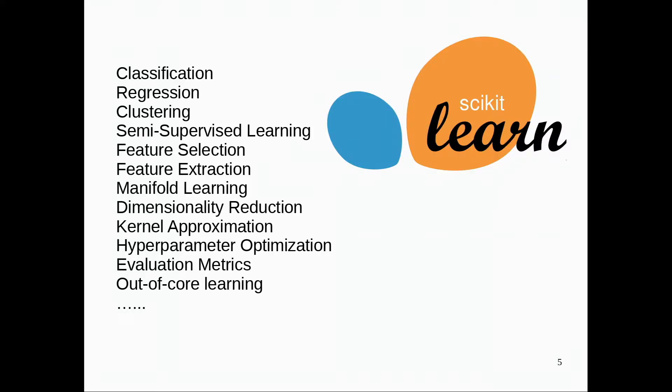Scikit-learn has a lot of stuff in it — a bunch of algorithms. Everything you find in a standard machine learning textbook will be implemented there: classification, regression, k-means, clustering, DBSCAN, t-SNE. All of these algorithms come together with tools to evaluate them, tune hyperparameters, do cross-validation, and so on.